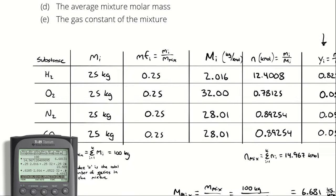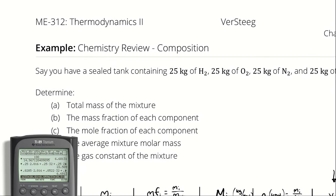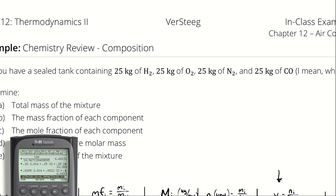If you're given mass or molar fractions instead of total quantities, you can always assume a convenient amount — say one kilogram — figure out the masses, calculate the number of moles, compute molar fractions, and divide the assumed mass by the total moles. The assumed quantity cancels out because only the relative amounts matter, not the absolute amount of substance.